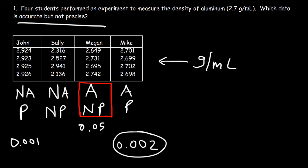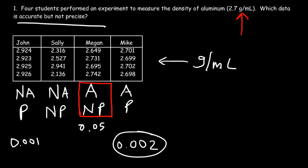Hopefully this problem helps you see the difference between accuracy and precision. Accuracy has to do with how close your numbers are to the accepted value — Megan and Mike's data are accurate because they're very close to 2.7. Precision has to do with how closely your data agrees with itself — John's data is precise because his values are very close to each other, and so is Mike's. Now you understand the difference between accuracy and precision. Thanks for watching.